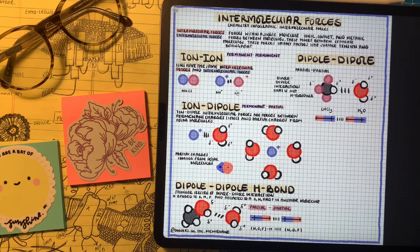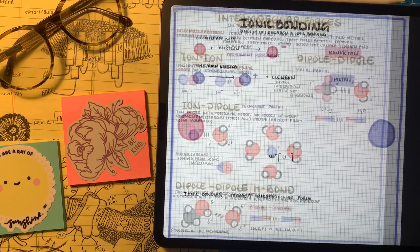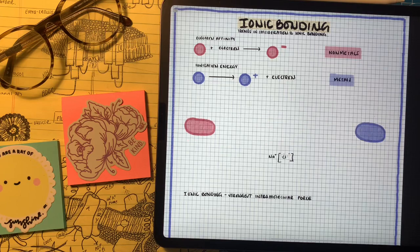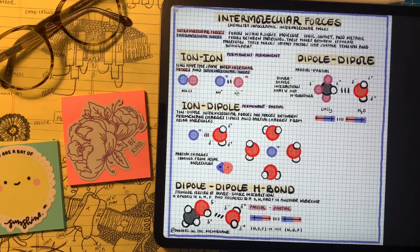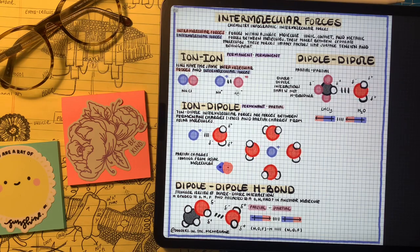The first example of intermolecular forces is the strongest one, which is ion-ion interactions. The interesting thing about ion-ion interactions is that the intramolecular force and the intermolecular forces are the same. Ion-ion is the strongest because it's coming from two permanent charges. Later on, we're going to find the interactions between partial charges and molecules with no charges.